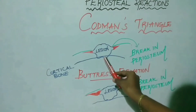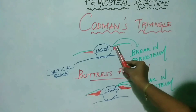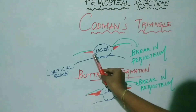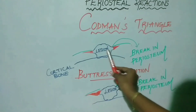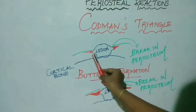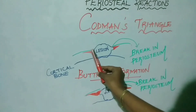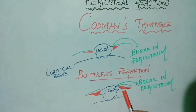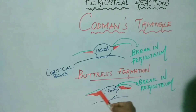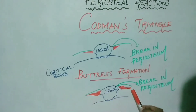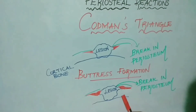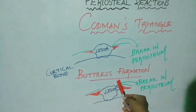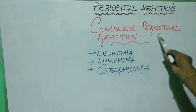Codman's triangle is highly suggestive of bone sarcoma. The tumor is growing so rapidly that it breaks off part of the periosteum; only the periosteum near the margin of the lesion has time to ossify, while the center shows no ossification, leaving a triangular-shaped area of subperiosteal bone near the lesion margin. Buttress formation is seen in slow-growing benign lesions, characterized by breaking of the periosteum and beak-like solid periosteal new bone formation. It is considered an interrupted version of solid periosteal reaction, and an example is ameloblastoma.